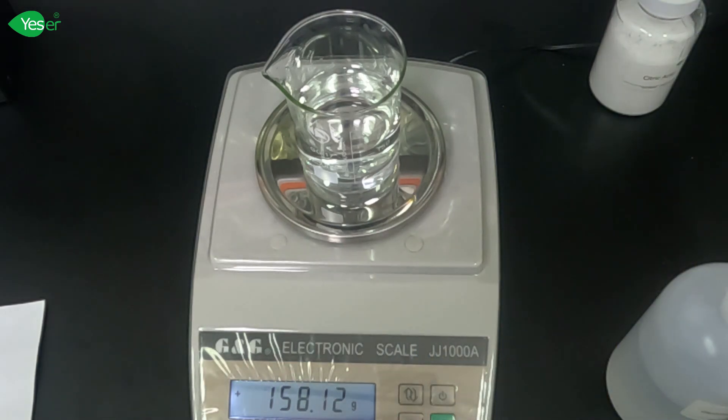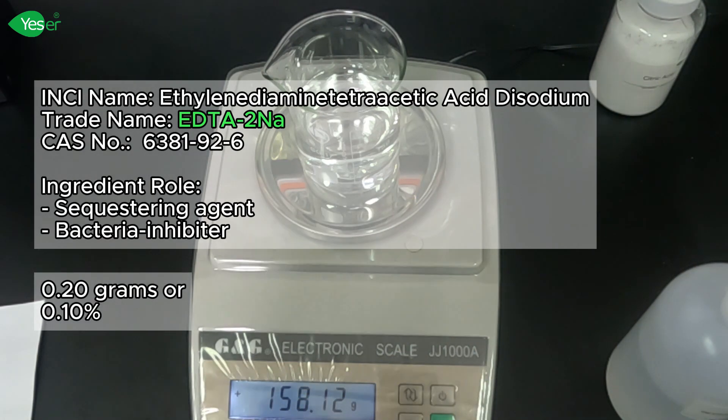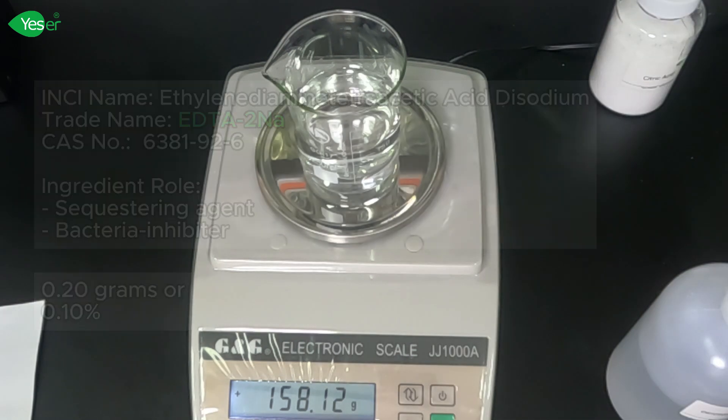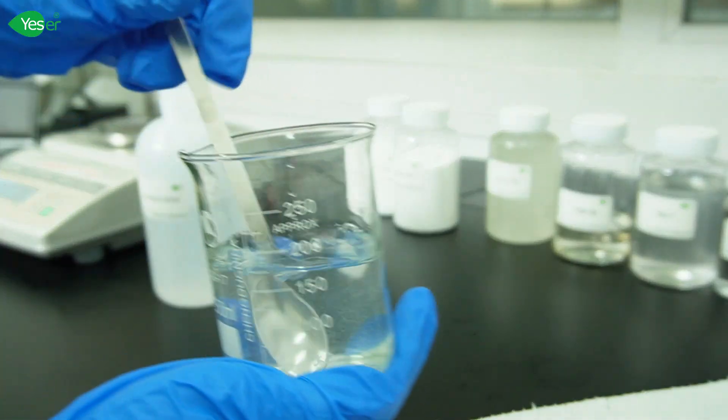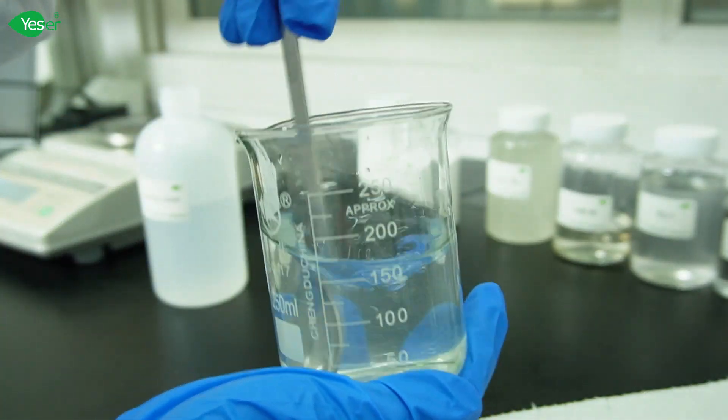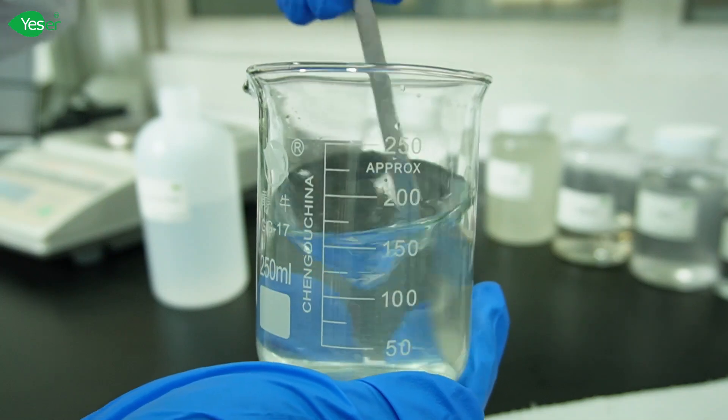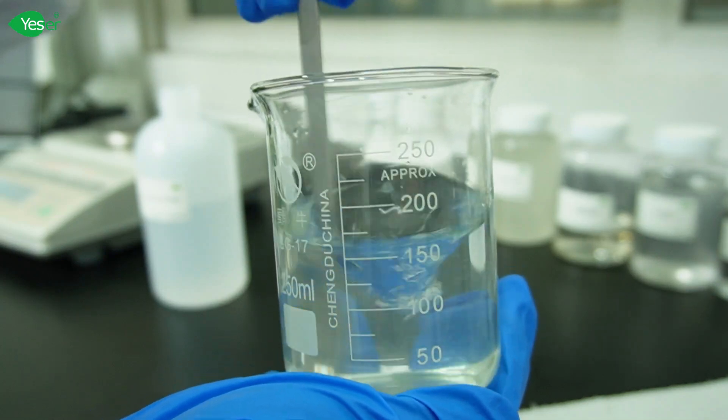Next, we will dissolve EDTA-disodium. Weigh about 0.2 grams of this, or 0.1% for our formula. Stir this until fully dissolved. This chelating agent from Yesure Chemicals ensures product stability by binding metal ions that could otherwise degrade the formula.